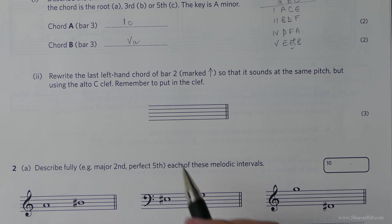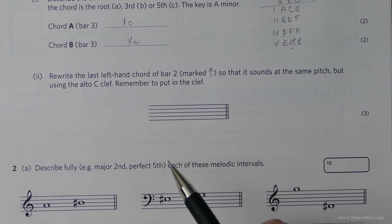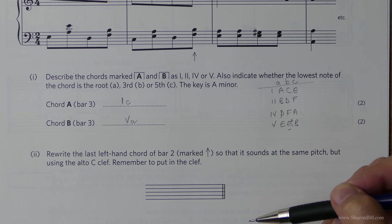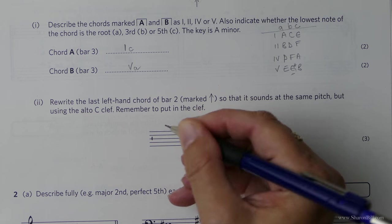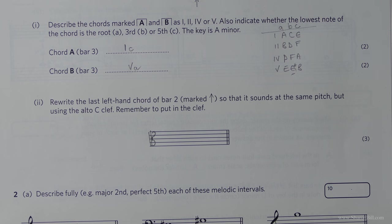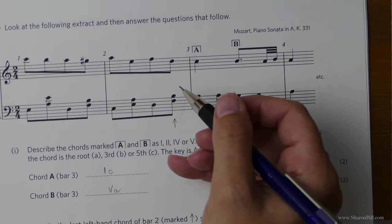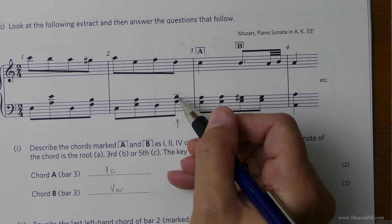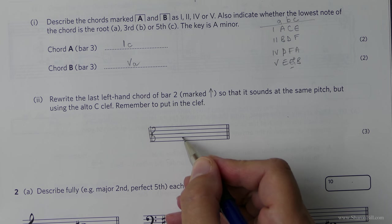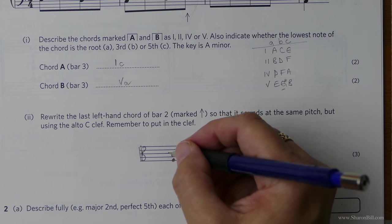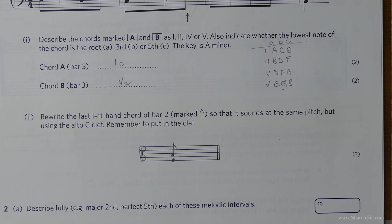So the next question asks us to rewrite the last left hand chord of bar two marked with an arrow. So it's this one here. The left hand chord is the lowest part here. And we need to make it sound at the same pitch, but we need to change the clef. So we're using the alto clef, which begins as middle C on the middle line. So let's get that in. And we just need to make sure we get the correct octaves. So here, that's middle C. So we've got the B below that. We've got one note below that and then the F. So one, two, three, four. One, two, three, four. That's correct. So we'll need to change the direction of the stems. And there we go. That's that question completed.